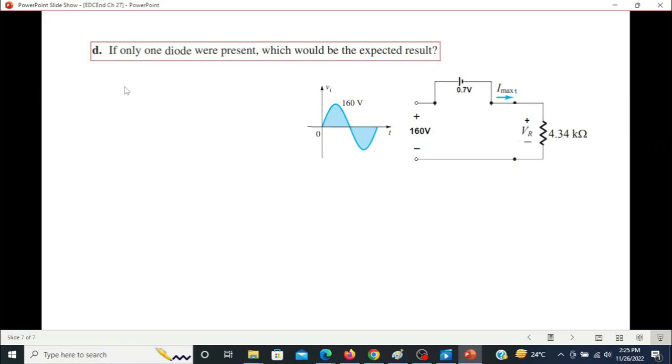Now the last part is: if one diode were present, which would be the expected result? Actually it should have been: if one diode is present, what would be the expected result? I have removed one of the diodes so only one diode is left. If you see, there is no change in the current because VR is 160 minus 0.7 here also. The resistance remains the same.